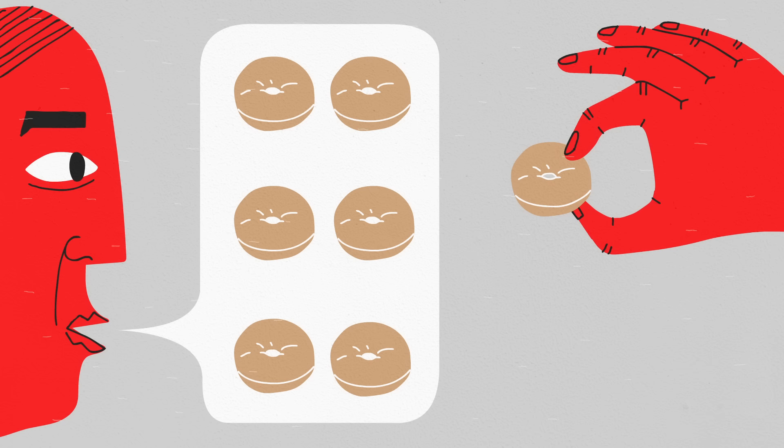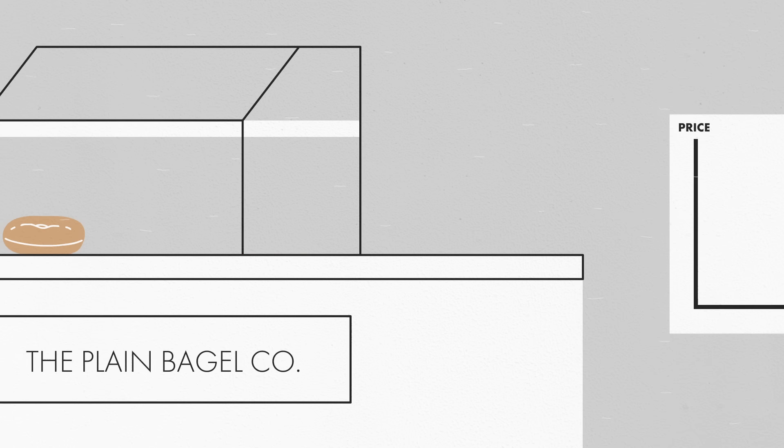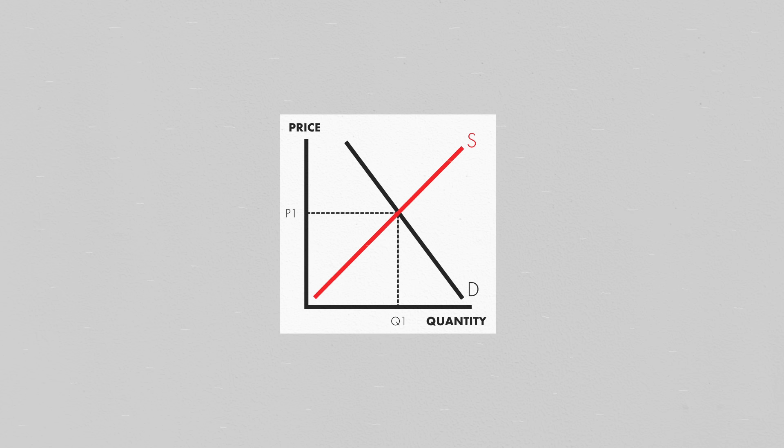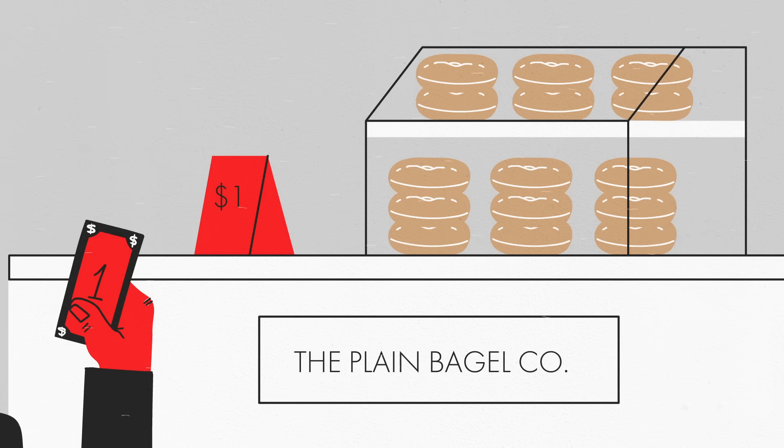Recessions occur when there is a negative disruption to the balance between supply and demand. There's a mismatch between how many goods people want to buy, how many products and services producers can offer, and the price of the goods and services sold, which prompts an economic decline.